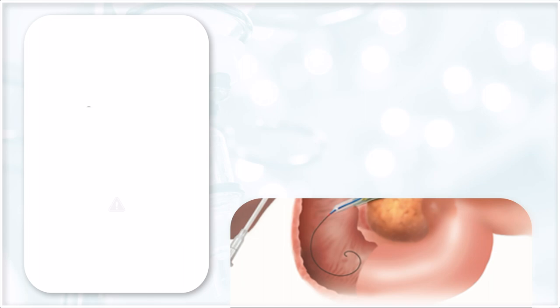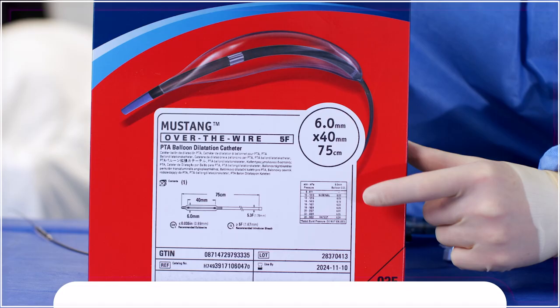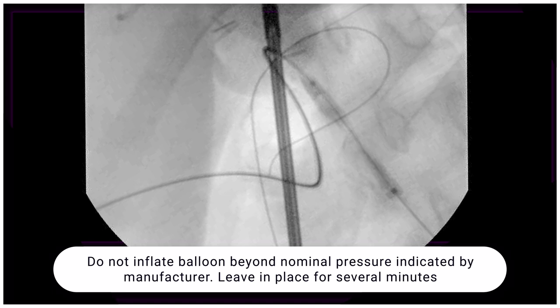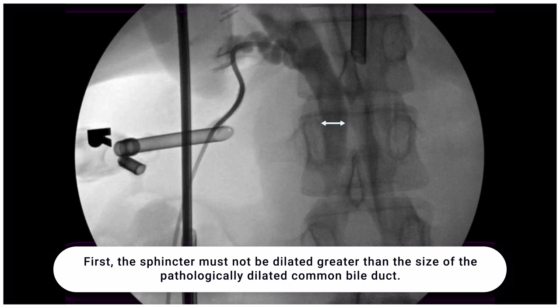Step 8: Bring the balloon up to profile slowly with elimination of the waist. Do not inflate the balloon beyond the rated pressure indicated by the manufacturer. Leave it in place for several minutes — we typically leave it in place for up to three to five minutes. For balloon size, the sphincter must not be dilated greater than the size of the pathologically dilated common bile duct.